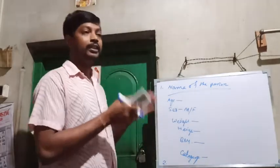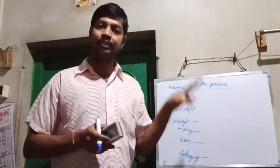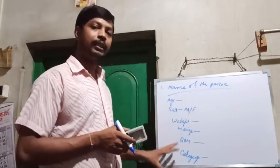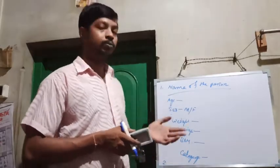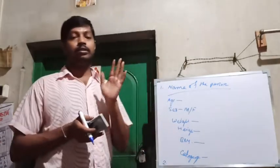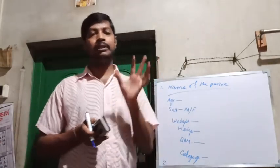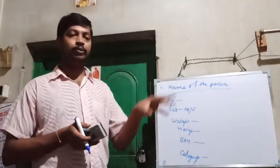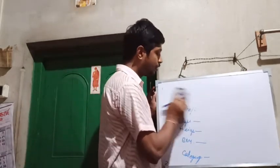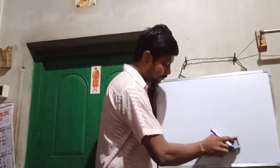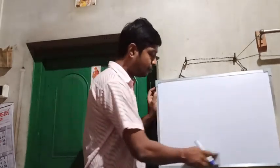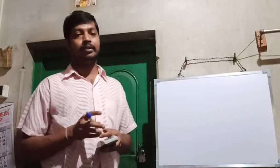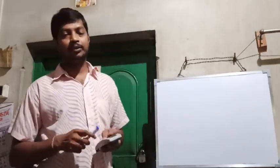If you want a table, you can arrange it as a table system; otherwise you can write it in list format in your record book. You have to complete a minimum of 10 BMI measurements recorded in your record book. Today's class ends here; we will come to practical 3 next. Thank you so much. Stay home, stay safe.